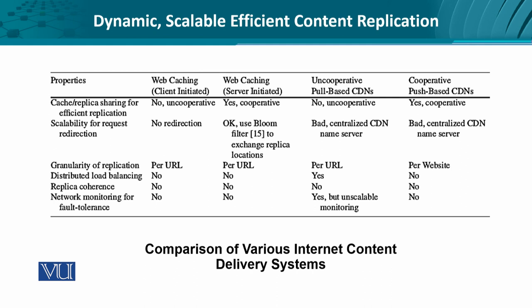With that in view, let's look at how internet content delivery systems vary in terms of performance and other properties. The classification includes web-based caching — where either the client or server initiates the request — and uncooperative, pull-based content delivery networks with no coherence or coordination between servers, caches, and replicas. Then we have push-based content delivery networks, which are cooperative.